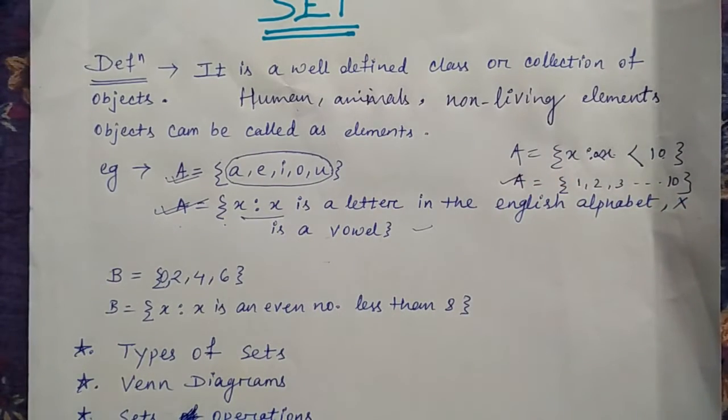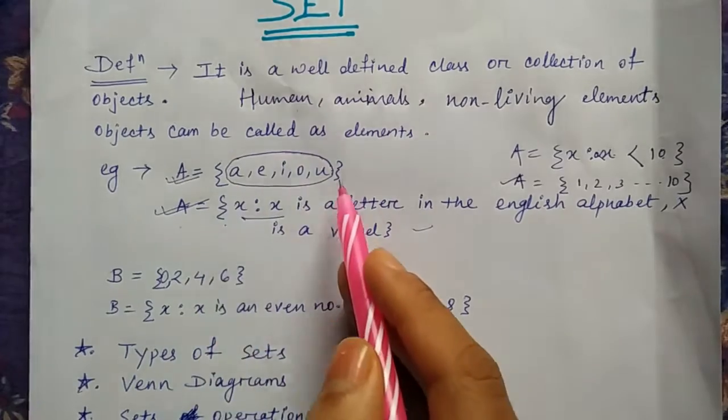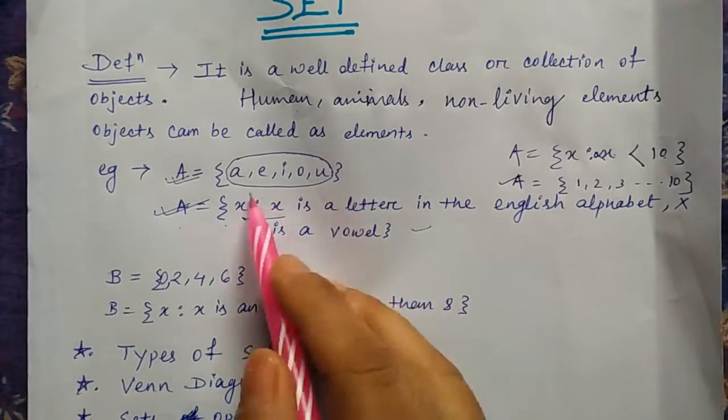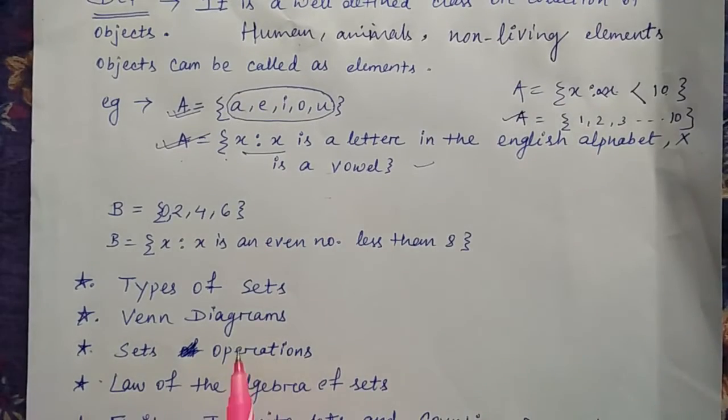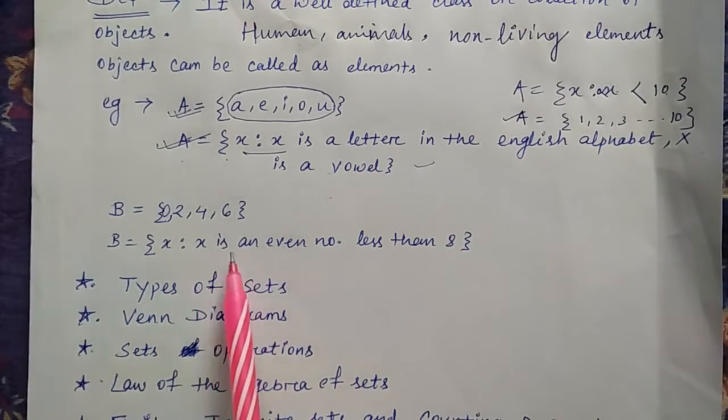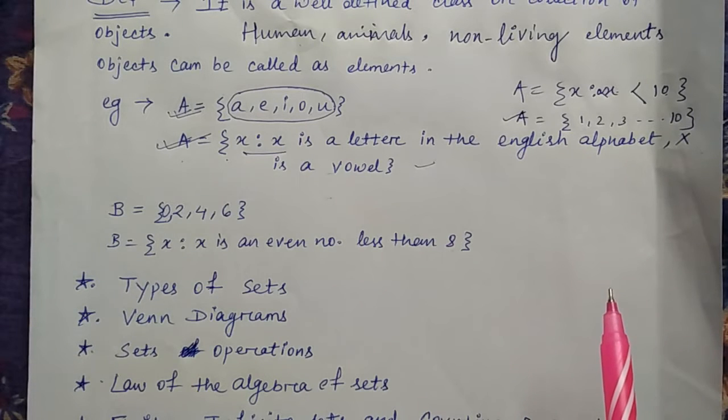Always remember that a set always starts with a curly bracket or flower bracket and it always ends with the same thing, curly or flower bracket. In the second one you can see B = {x: x is an even number less than 8}.